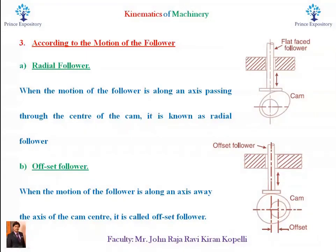Radial follower: when the motion of the follower is along an axis passing through the center of the cam, it is known as a radial follower. Offset follower: when the motion of the follower is along an axis away from the axis of the cam center, it is called an offset follower.